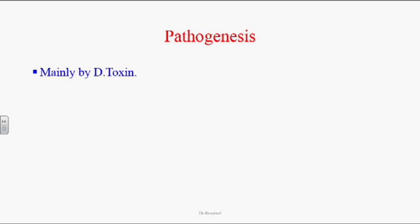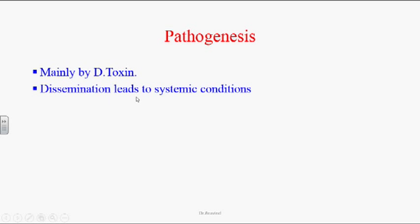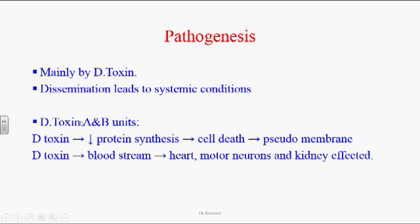Pathogenesis: Pathogenesis occurs mainly through diphtheria toxin, which when disseminated into the bloodstream can lead to systemic conditions. The toxin has A and B units. It inhibits protein synthesis and causes cell death, ultimately leading to pseudomembrane formation. When the toxin enters the bloodstream, the B unit attaches to heart tissues, causing damage, and can also attach to motor neurons and kidney tissues.